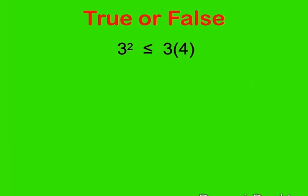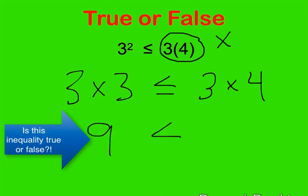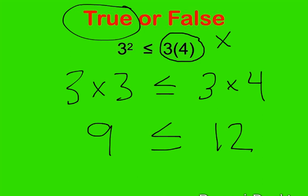Here's the next example. Again we're deciding whether this is true or false, so we solve both sides and compare. On the left side we have 3 squared, which is 3 times 3, and we're checking if that is less than or equal to 3 times 4 — remember, parentheses next to a number means multiply. 3 times 3 is 9, and 3 times 4 is 12. Since 9 is less than 12, this statement is true. It would also be true if the right side equaled 9, because the sign includes equal to.